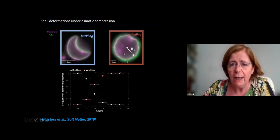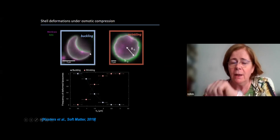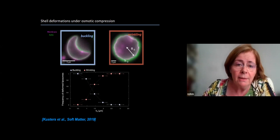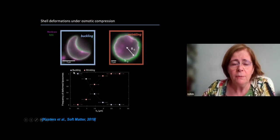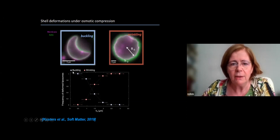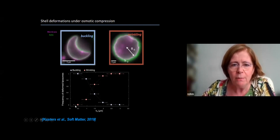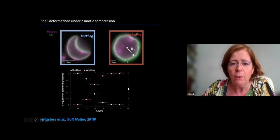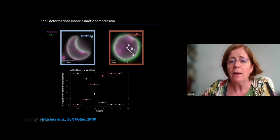We measured the frequency of buckled versus wrinkled liposomes. At low thickness of the actin shell — actin in green, membrane in purple — we see more buckling; at high thicknesses, we see lots of wrinkling.